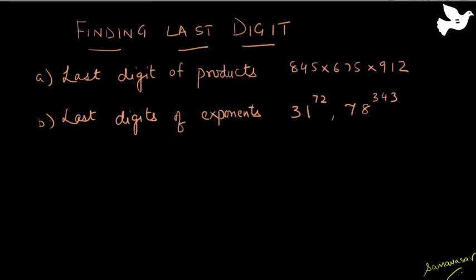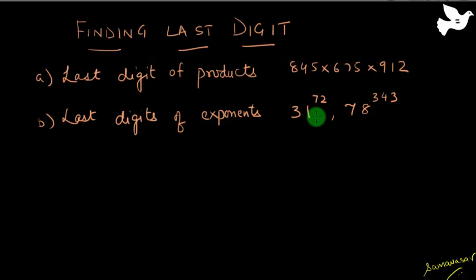Hello everyone. In this series of videos, we will be learning how to find the last digit and the last two digits of certain products and exponents. So if you are given a product like 845 x 760 x 675 x 912, what is the last digit? And also the last digit of exponents like 31 raised to the power 72, or 78 raised to the power 343. We will begin with finding the last digit.